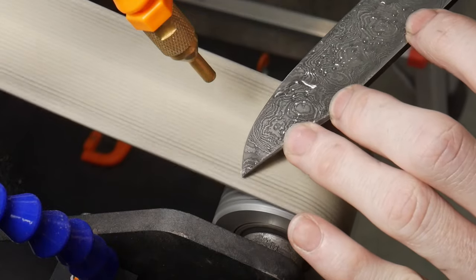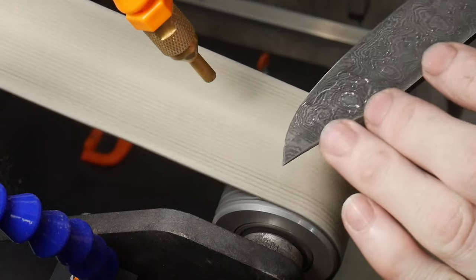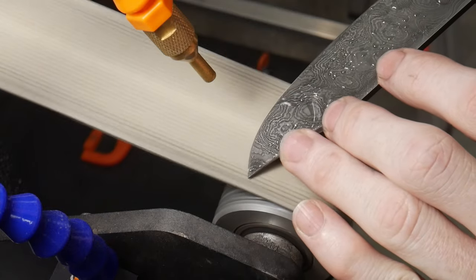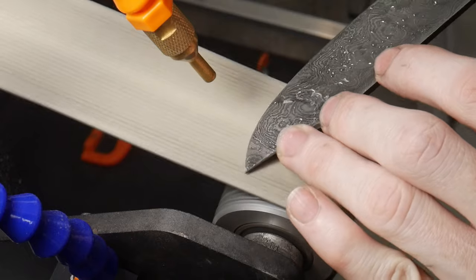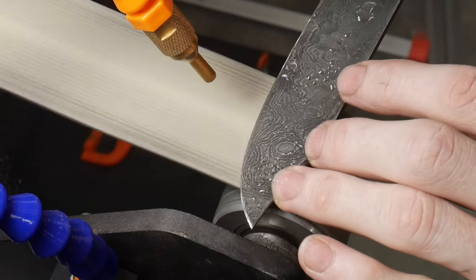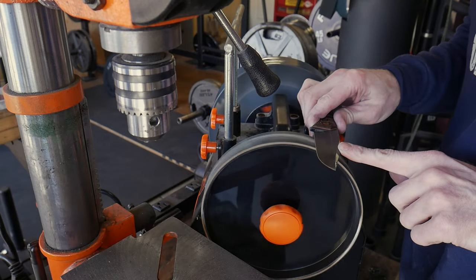Continue until you see a burr develop along your entire edge, then swap over to a 1200 grit belt. This should reduce the size of the burr but you'll still see it. To remove the burr after the Norax, you can strop with whatever method you are comfortable with.